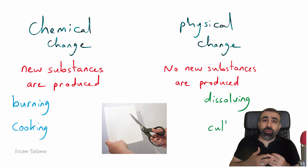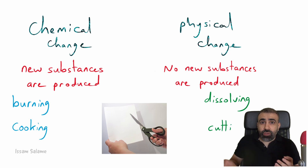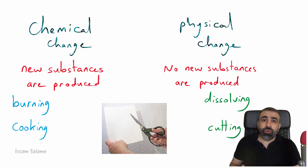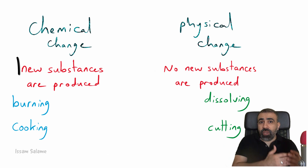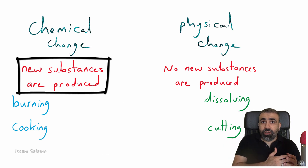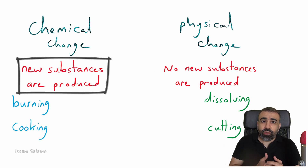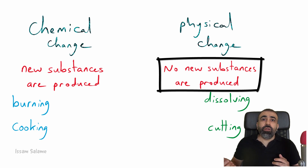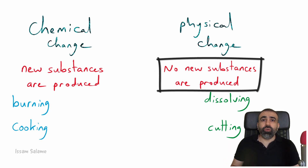If you have a piece of paper and you cut it, do you get a new substance? There is no new substance, so it's a physical change. In summary: in chemical change, new substances are produced, while in physical change, no new substances are produced.